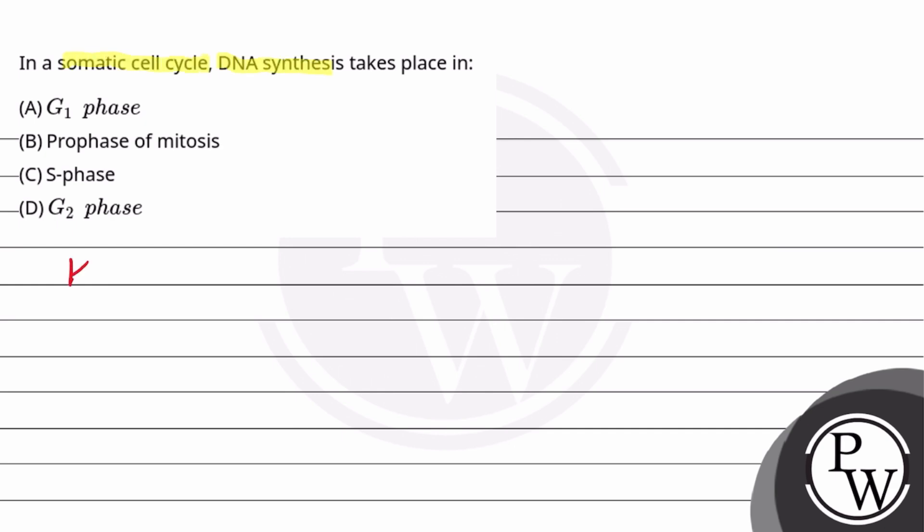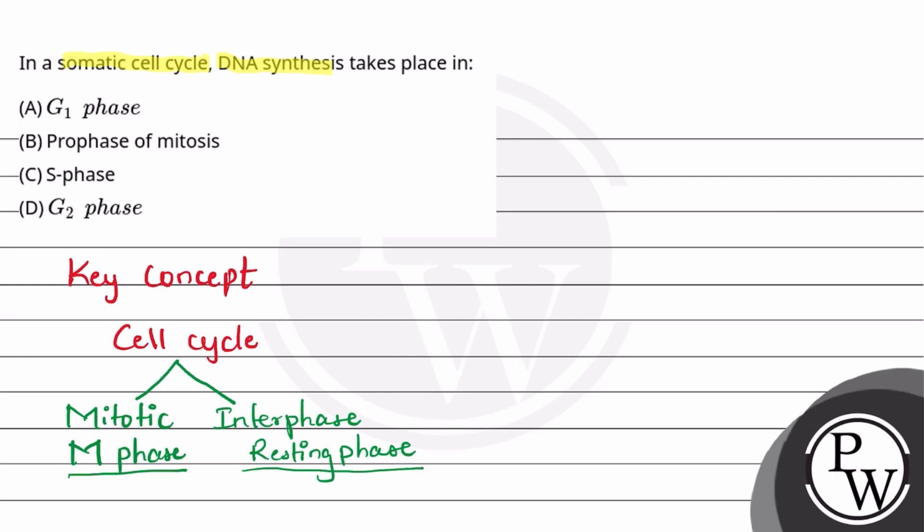In which stage does it happen? So our key concept here is the cell cycle. The cell cycle is divided into two stages: one is the mitotic stage, or M phase, and the other is interphase, also called the resting phase. Mitotic phase is where division happens, and resting phase is where division doesn't happen.